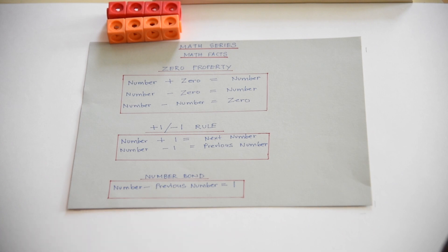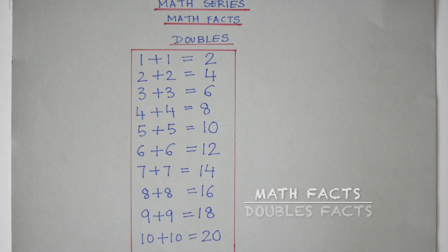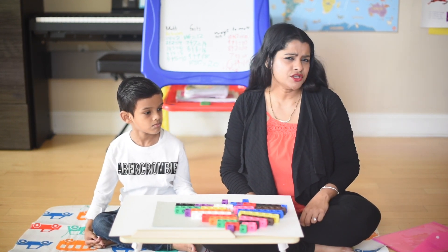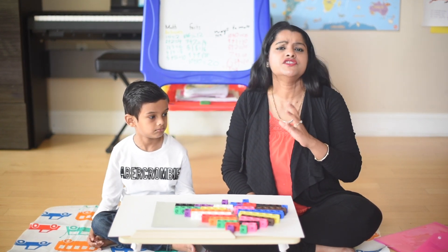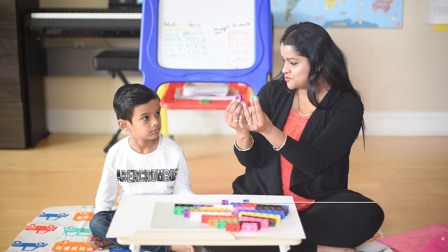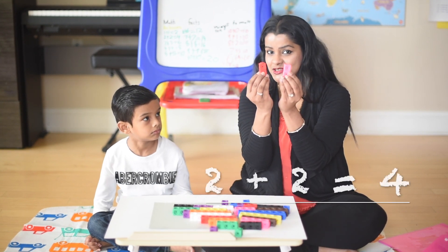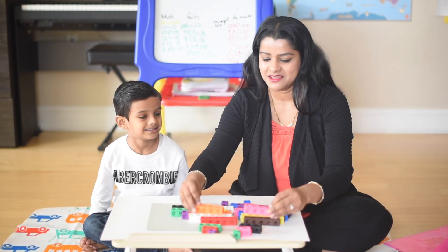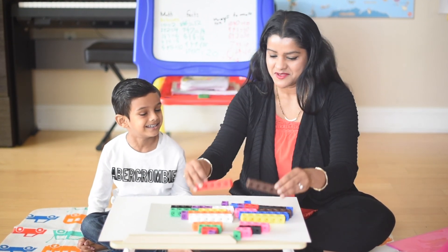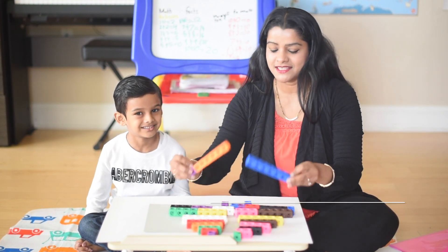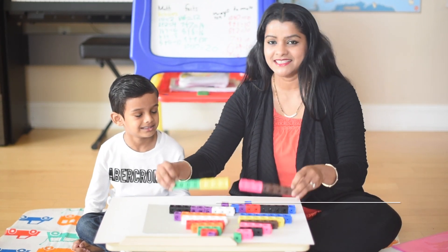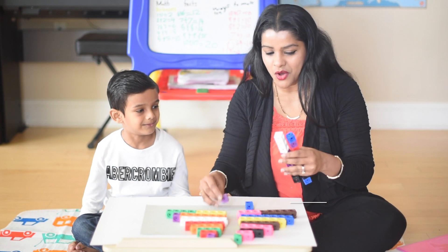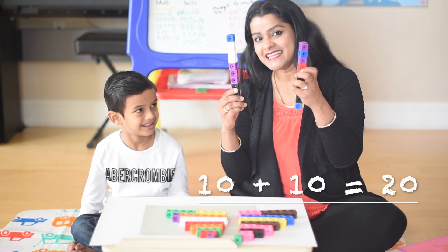Ishaan, what is 100 minus 99? One. Exactly — great job! Now we are going to do double facts, and it's the easiest thing to learn in math. Actually, if you think about it, it is skip counting by two, or even numbers, which we will cover later. What is 1 plus 1? Two. 2 plus 2? Four. 3 plus 3? Six. 4 plus 4? Eight. 5 plus 5? Ten. 6 plus 6? Twelve. 7 plus 7? Fourteen. 8 plus 8? Sixteen. 9 plus 9? Eighteen. And 10 plus 10? Twenty. Great job!